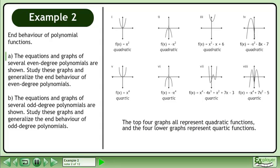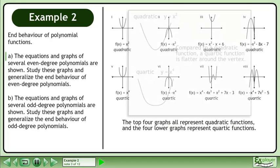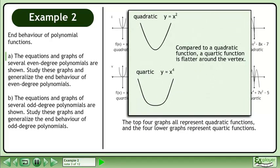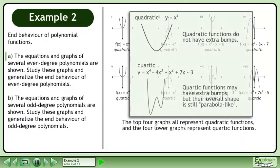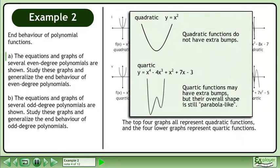The top four graphs all represent quadratic functions, and the four lower graphs represent higher even degree polynomial functions. Compared to a quadratic function, a higher degree even polynomial is flatter around the vertex. Quadratic functions do not have extra bumps, but higher degree even polynomials may have extra bumps, though their overall shape is still parabola-like.